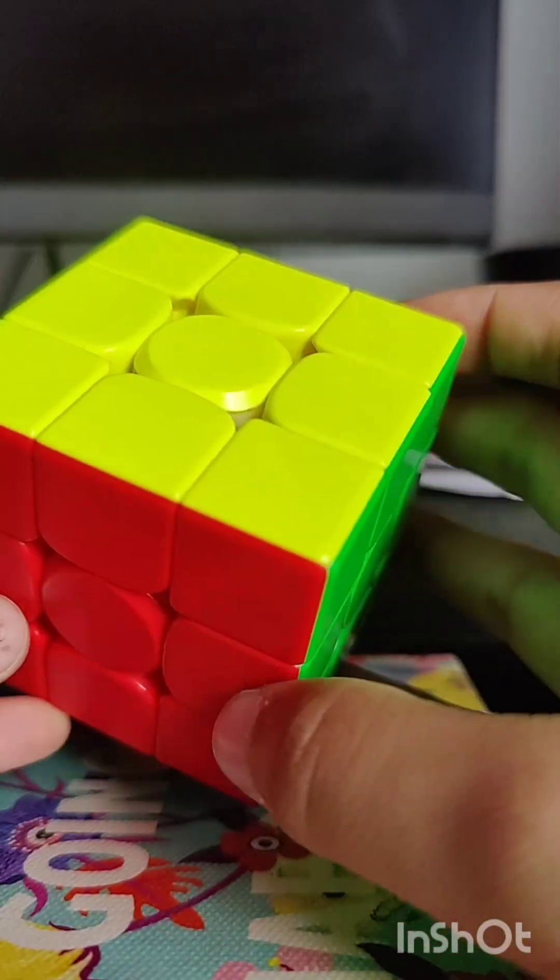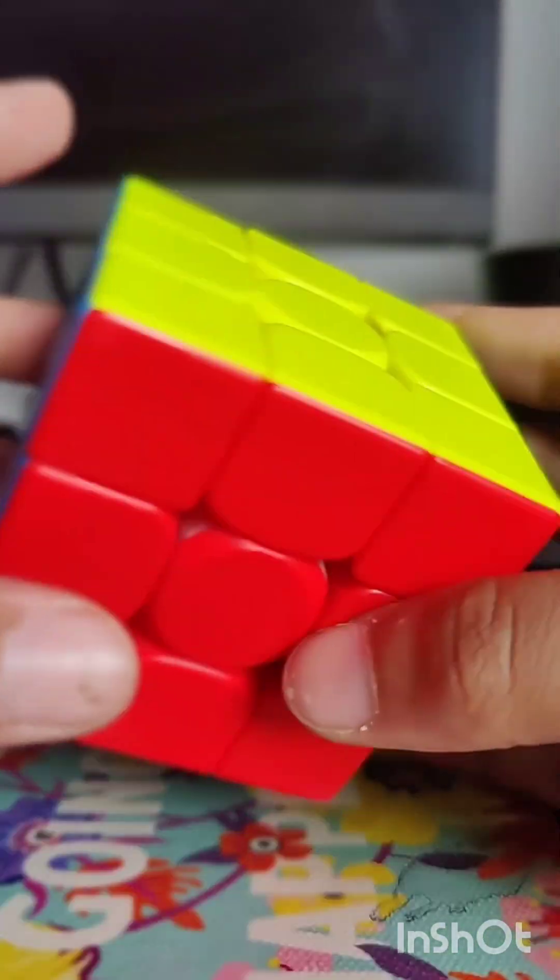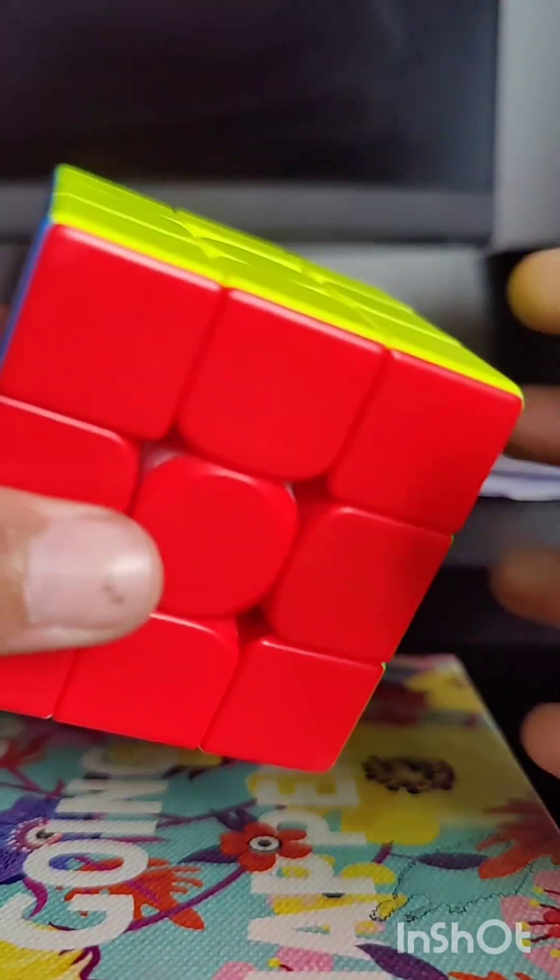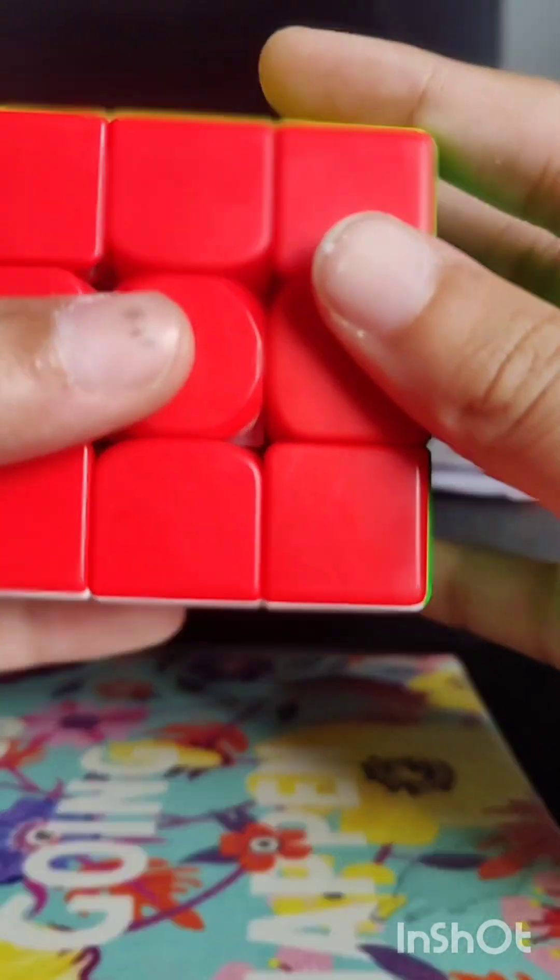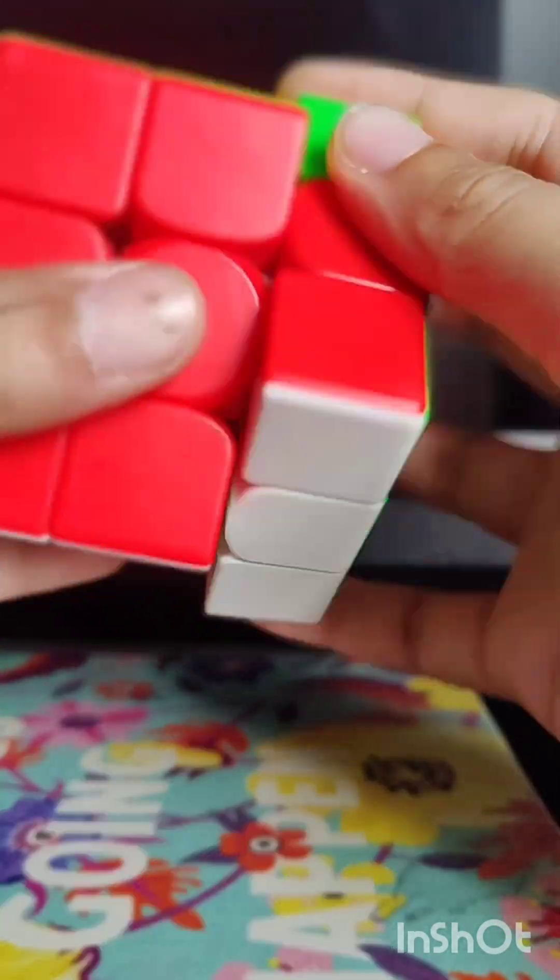So if you're trying to solve the Rubik's cube fast, finger tricks are really important because without finger tricks you will be turning like this, which is really slow. But finger tricks can make it turn this fast, or at least this fast.